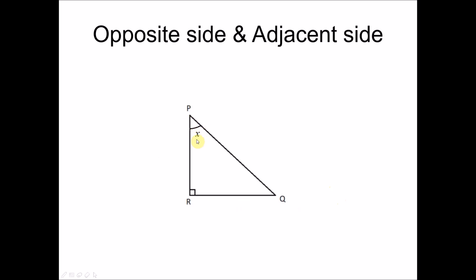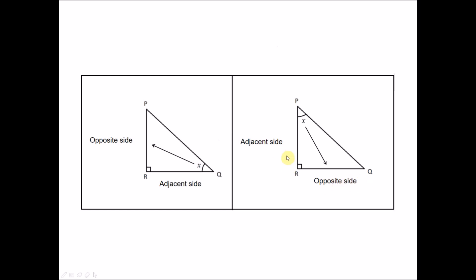If we take a different reference angle, the names change: RQ becomes the opposite side and PR becomes the adjacent side. So opposite and adjacent change depending on the position of the reference angle, which is always an acute angle — that is, less than 90 degrees.